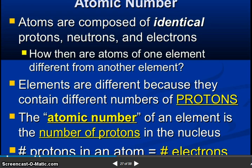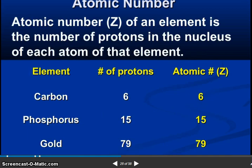So atomic number. Atoms are composed of identical protons, neutrons, and electrons. How then are atoms of one element different from another element? Elements are different because they contain different numbers of protons. The atomic number of an element is the number of protons in the nucleus.